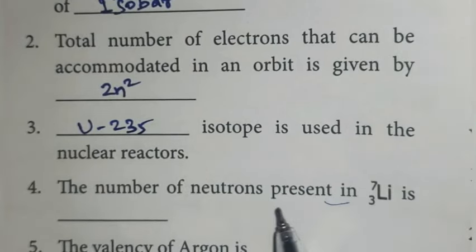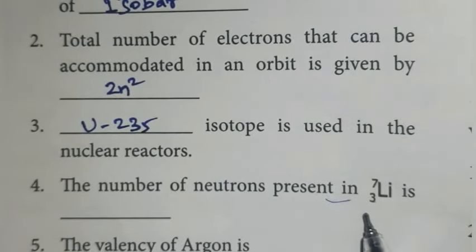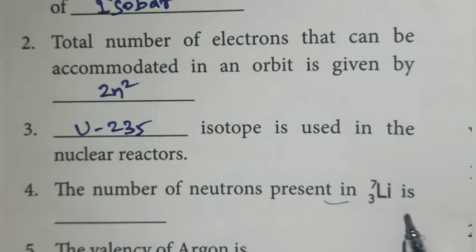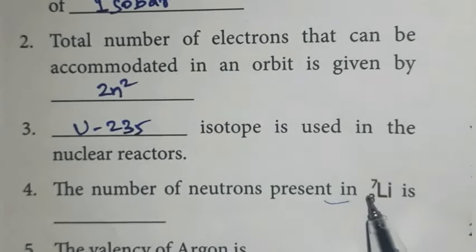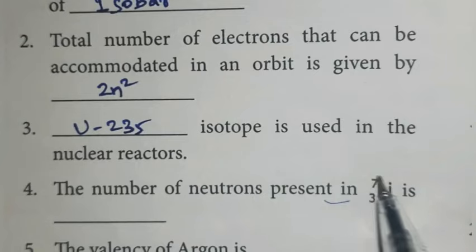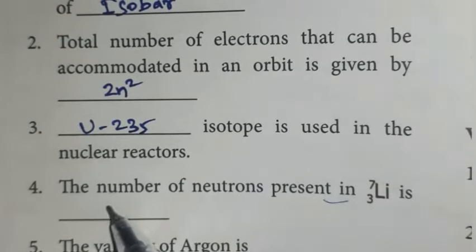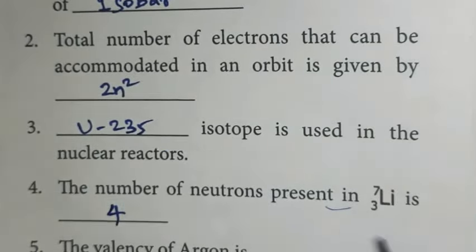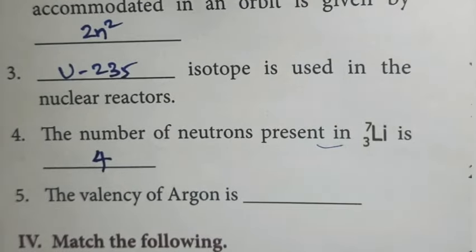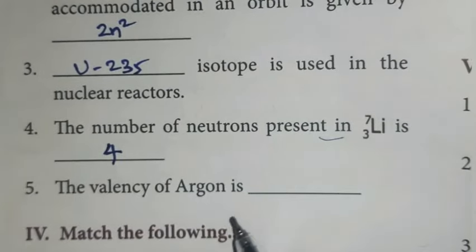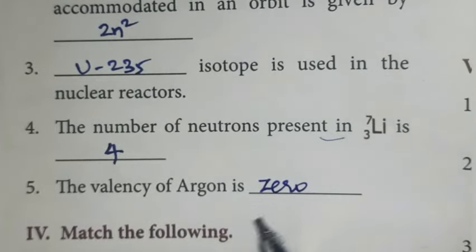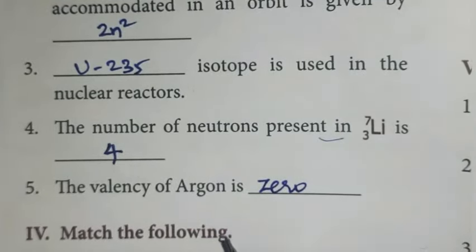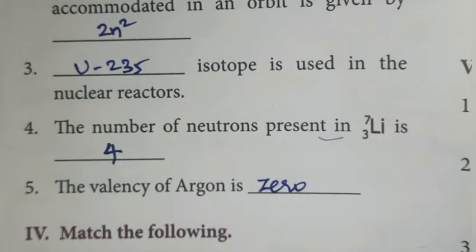Fourth one: the number of neutrons present in lithium-3-7. For neutrons, we subtract atomic number from mass number. So 7 minus 3 is 4. This is the number of neutrons in lithium. Fifth one: the valency of argon is 0 because the outermost orbit is completely filled. So in that case, there is no valency.